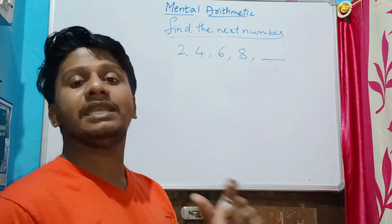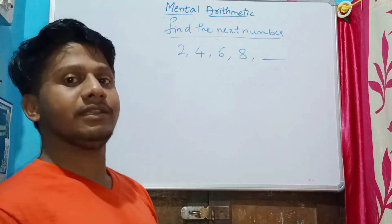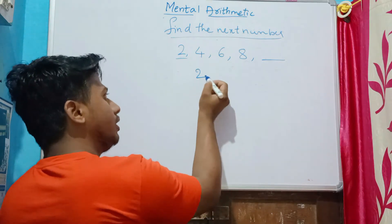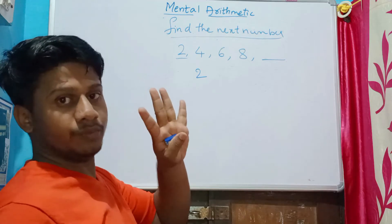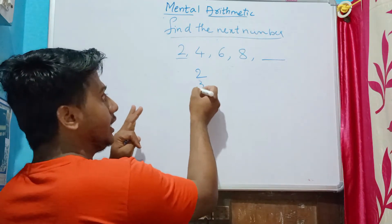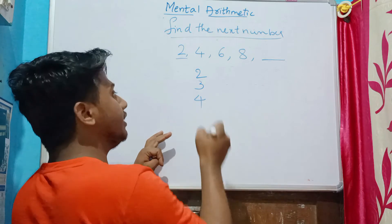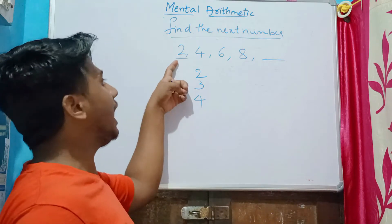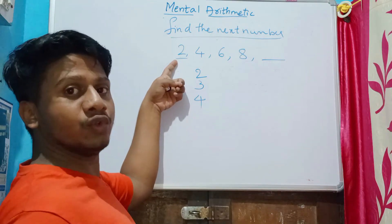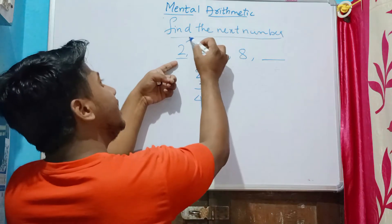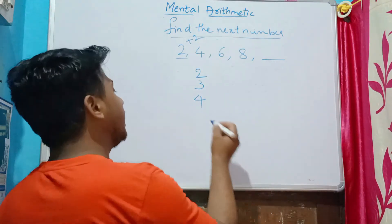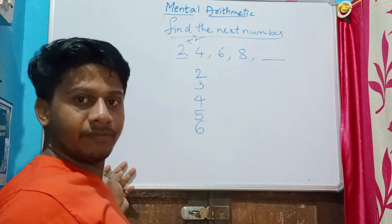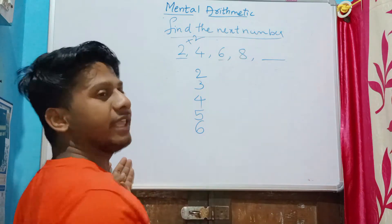The numbers are arranged in a pattern. Let's see what that pattern is. The first number is two. After two, the next number written is four. To get from two to four, how many numbers do I add? I add two. Yes.